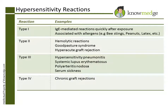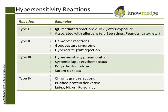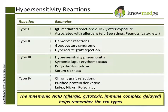Type 4 is known as delayed or cell-mediated hypersensitivity. Examples include chronic graft rejections, purified protein derivative or PPD, or exposure to latex, nickel, or poison ivy. A quick mnemonic to remember the four types of hypersensitivity reactions is ACID.